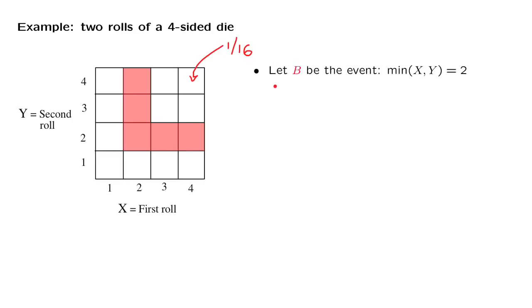So we condition on this event. This results in a conditional model where each one of those five outcomes are equally likely, since they used to be equally likely in the original model.